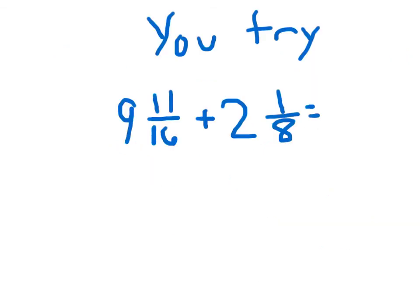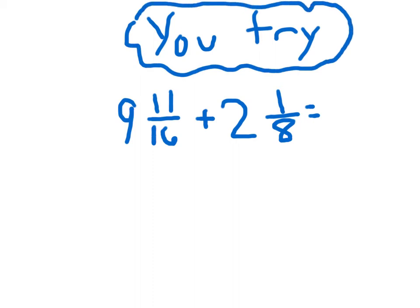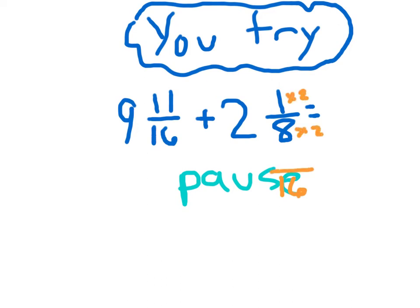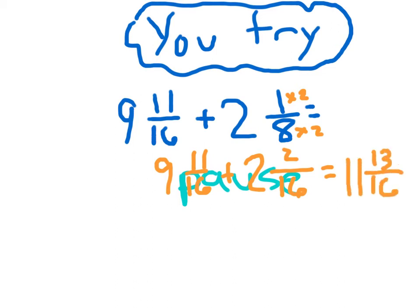Now it's time for you to try: nine and eleven-sixteenths plus two and one-eighth. Please hit pause. One of the easier denominators to choose is sixteenths. To get one-eighth to sixteenths, multiply by two in the numerator and denominator, giving two and two-sixteenths plus nine and eleven-sixteenths. Eleven plus two is thirteen-sixteenths, and nine plus two is eleven. So we have eleven and thirteen-sixteenths, which is in simplest form — thirteen is a prime number and sixteen is not divisible by thirteen.